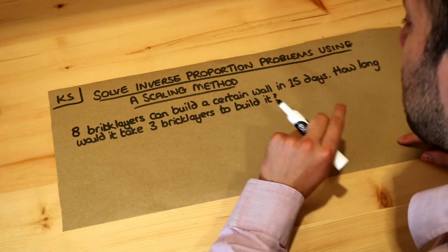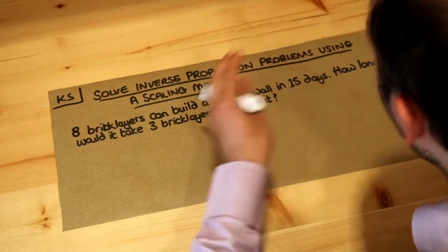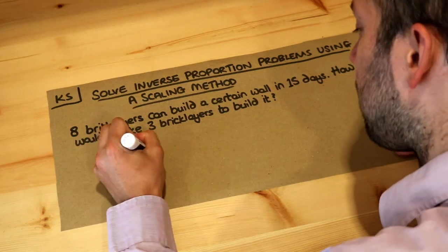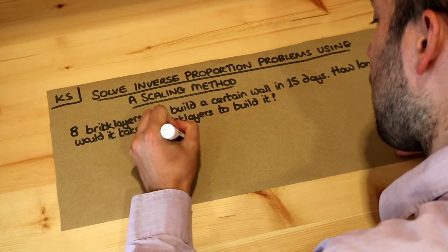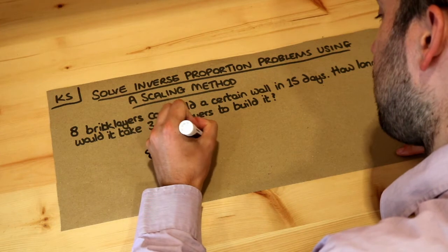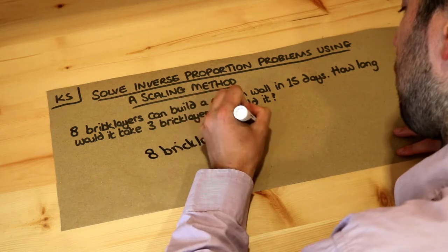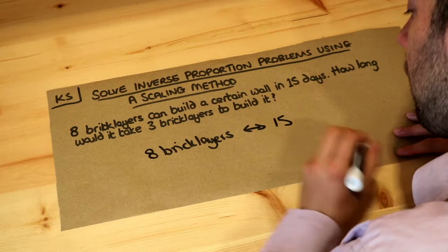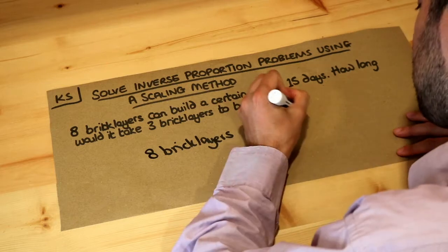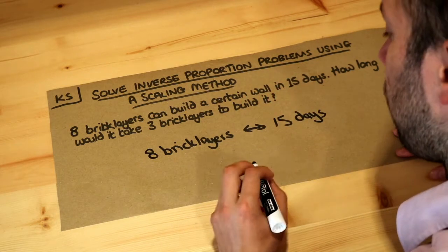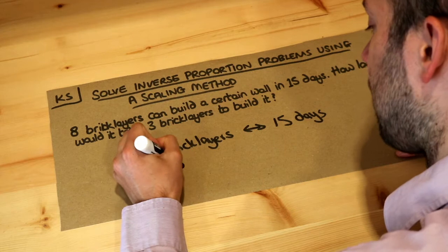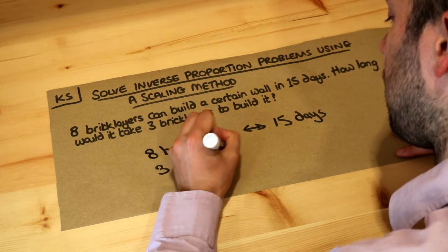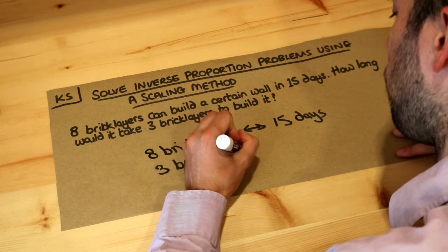We can use that principle of opposite scaling here. So we've got eight bricklayers — let's write out the information. Eight bricklayers take 15 days; I like to use a double-ended arrow. How long would three bricklayers take? Now there's a variety of different methods to do this, but I'm just going to show you one.